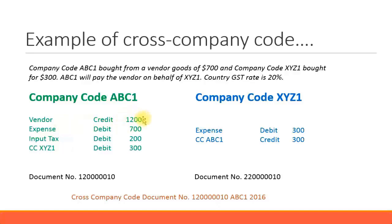The $1,200 is a credit amount for the vendor. For company code ABC1, there are expenses of $700, and for company code XYZ1, expenses of $300. The tax amount of $200 is paid by company code ABC1. A cross-company code transaction of $300 is recorded for XYZ1, and on the other side, a cross-company code transaction credit of $300 is recorded for ABC1.